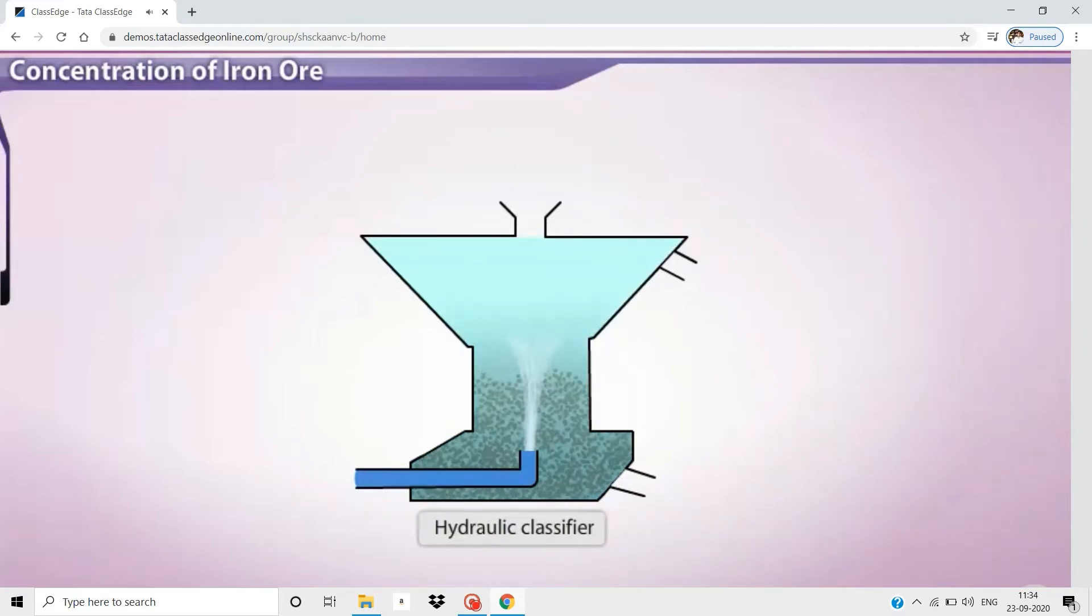A jet of water is passed through the bottom of the reservoir. This thoroughly mixes the content. The lighter gangue particles move up and are washed away from the top. The denser particles of the ore settle at the base and are collected via an outlet.